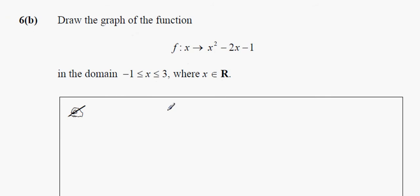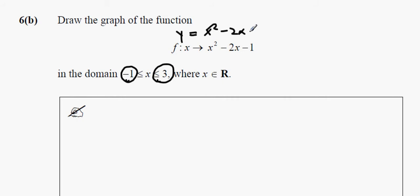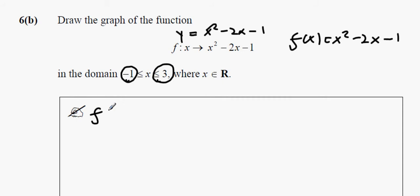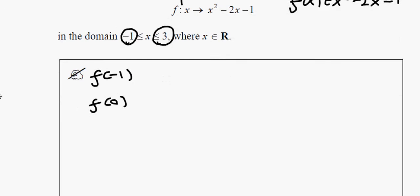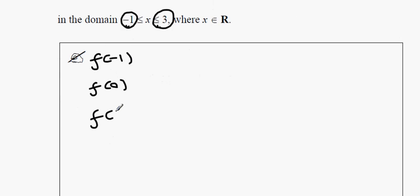Once again, the start is minus 1 and the end is 3. The function is f(x), or y, equals x squared minus 2x minus 1. So what we're going to do is get f(-1), f(0), f(1), f(2), and f(3).